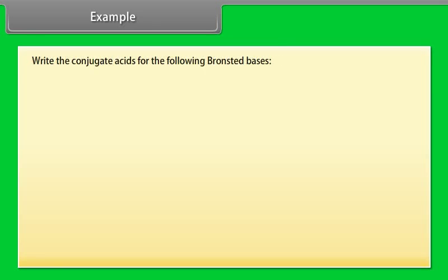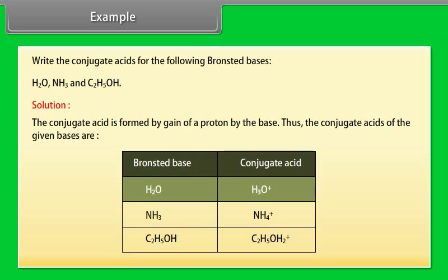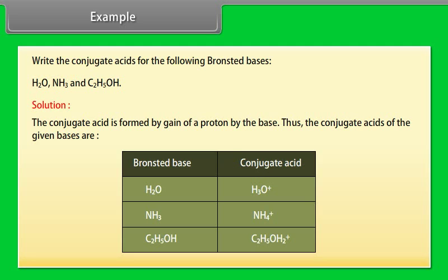Example: Write the conjugate acids for the following Bronsted bases — H₂O, NH₃, and C₂H₅OH. The conjugate acid is formed by gain of a proton by the base. Thus the conjugate acids are: for H₂O, the conjugate acid is H₃O⁺; for NH₃, the conjugate acid is NH₄⁺; and for C₂H₅OH, the conjugate acid is C₂H₅OH₂⁺.